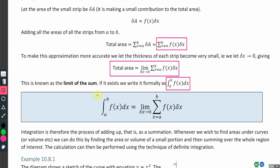In conclusion, this infinite sum is actually the same as an integral. Integration is therefore the process of adding up, i.e. summation, of lots of very thin strips. Whenever we wish to find areas under curves, or the same can be done when finding volumes, we can do this by finding the area or volume of a small portion, and then summing over the whole region of interest. The calculation can then be performed using the technique of definite integration.